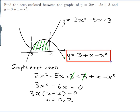And this area here is the area underneath this function here. So the area beneath 2x squared minus 5x plus 3.